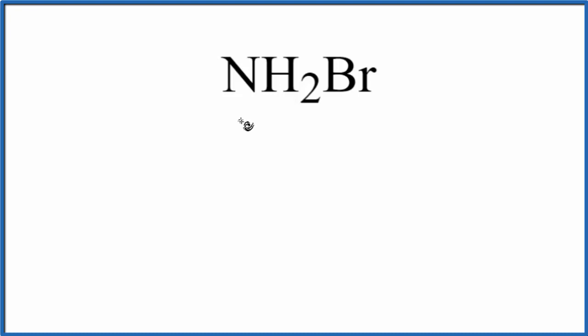Nitrogen is in group 15, sometimes called 5A, so it has five valence electrons. Hydrogen is in group 1, so it has one valence electron, but we have two hydrogens. Plus bromine has seven valence electrons. This gives us a total of 14 valence electrons for the NH2Br Lewis structure.